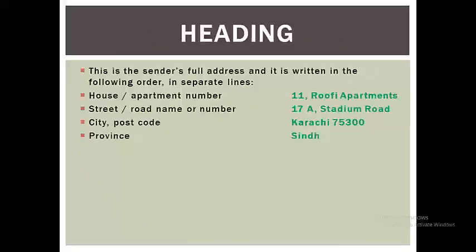The very first part of the informal letter is heading. This is the sender's full address, and it is written in calling order, in separate lines. You must write your house or apartment number, as shown in the slide. Then the second part is your street or road number. The third part is your city or postcode, and the last one is province. This heading is usually written on the top left of the page.